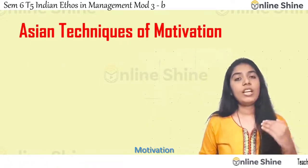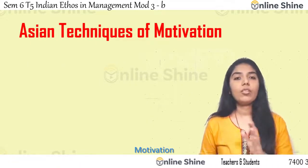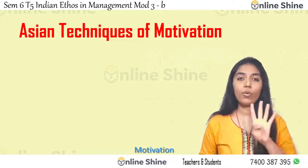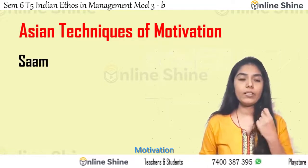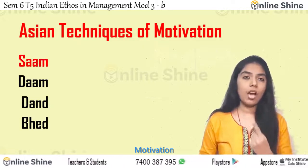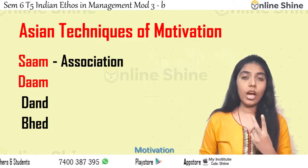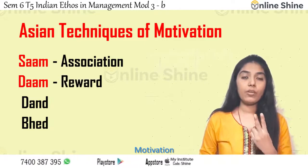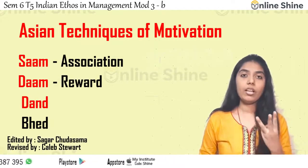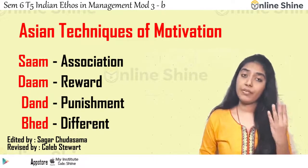Let us understand the Panch techniques of motivation. This gives us four criteria: Sam, Dam, Dand, and Bhed. Sam means association. Dam means reward. Dand means punishment. Bhed means differentiation — treating people differently based on the situation.